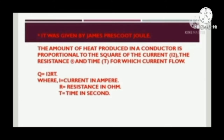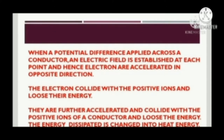When a potential difference is applied across a conductor, an electric field is established at each point. Electrons are accelerated in the opposite direction and collide with positive ions, losing their energy. They are further accelerated and again collide with positive ions of the conductor, losing their energy. This energy loss results in heat production.